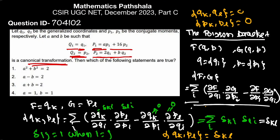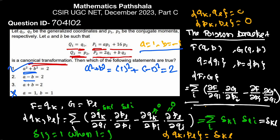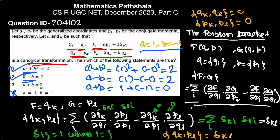Previously we got a equal to 1, now b equal to minus 1. Checking the options: option 4 states a equal to 1 and b equal to 1, which is false. Option 1 states a² plus b² equal to 2: 1² plus (−1)² equals 2, so option 1 is true. Option 2 states a minus b equal to 2: 1 minus (−1) equals 2, so option 2 is true. Option 3 states a plus b equal to 0: 1 plus (−1) equals 0, so option 3 is also true. Options 1, 2, and 3 are correct; option 4 is false. Thank you for watching this video, please subscribe to our channel and support us.